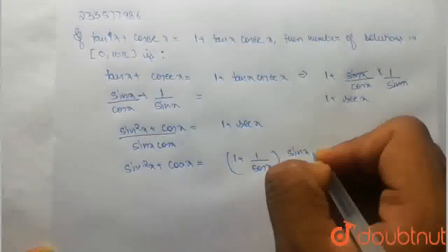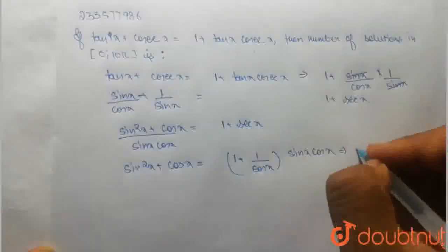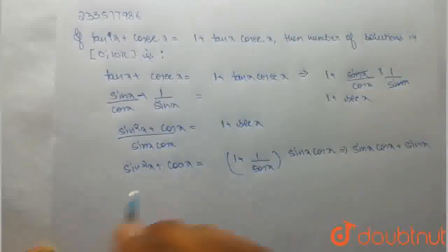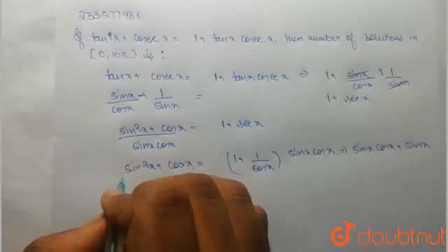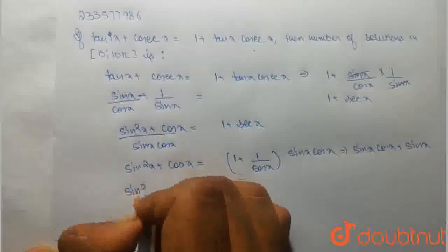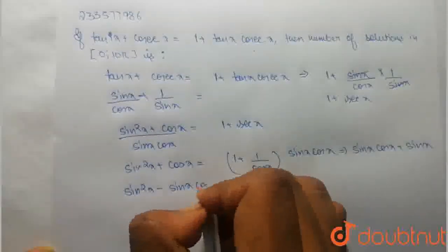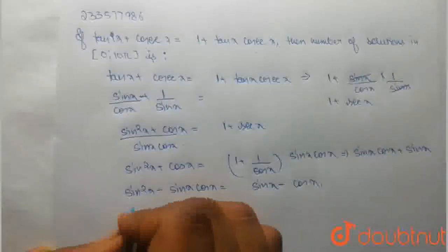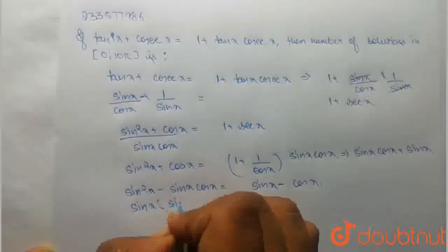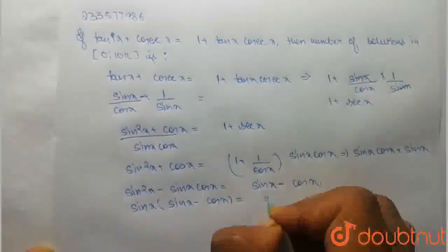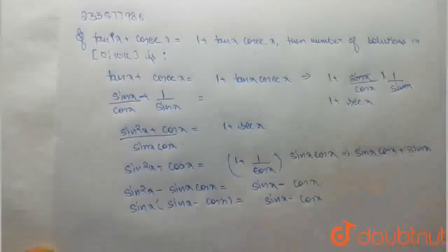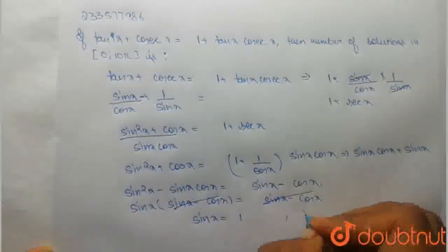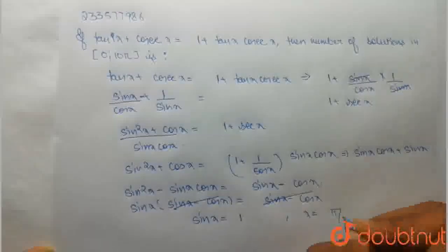So we can write it as sin x cos x plus sin x. We can write it as sin x plus cos x. So if we write sin squared x plus sin x cos x equals sin x. Therefore sin x equals 1 and x is equal to π by 2.